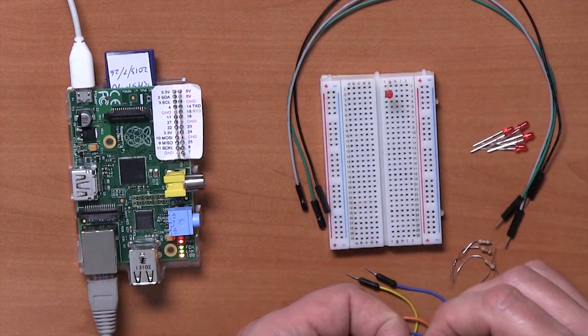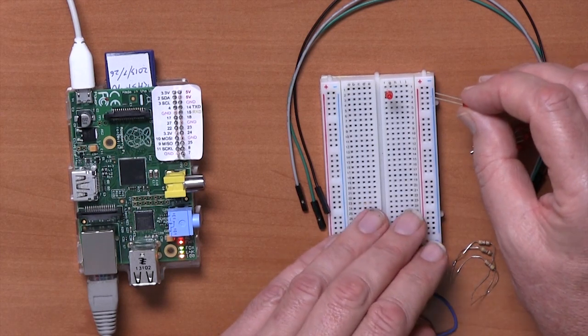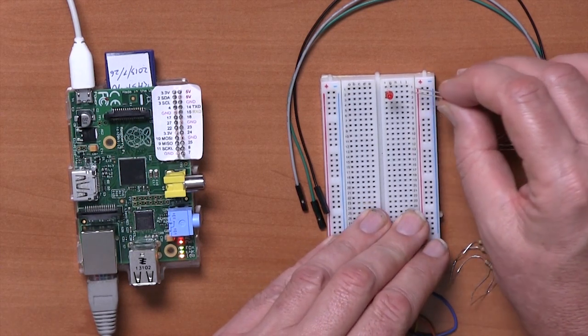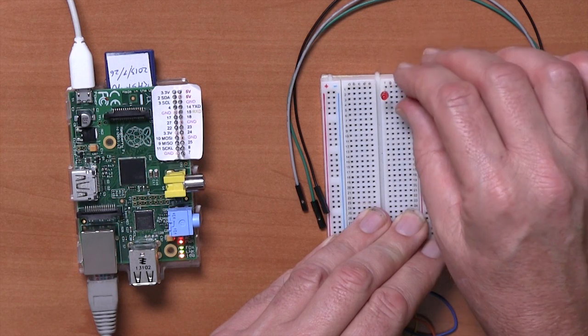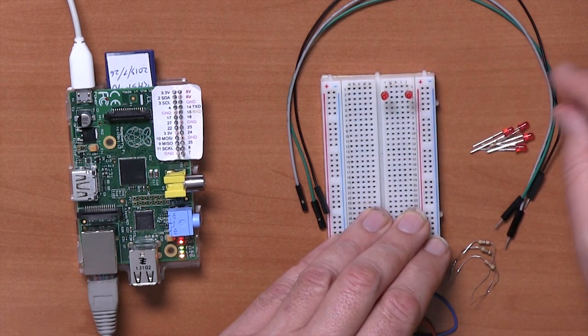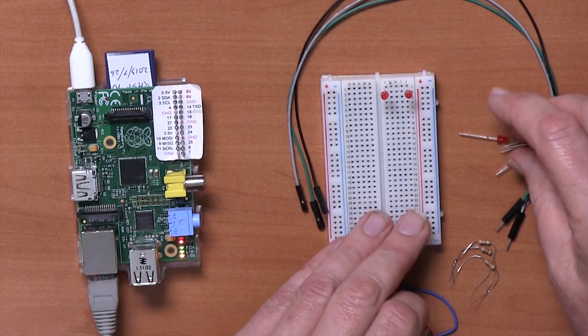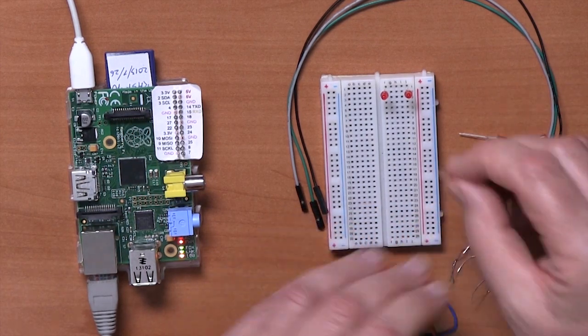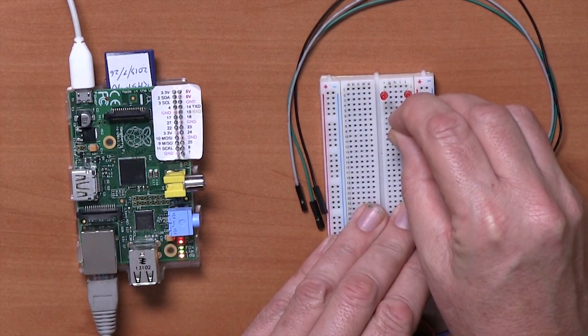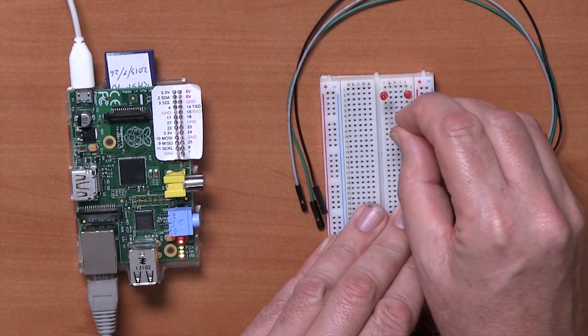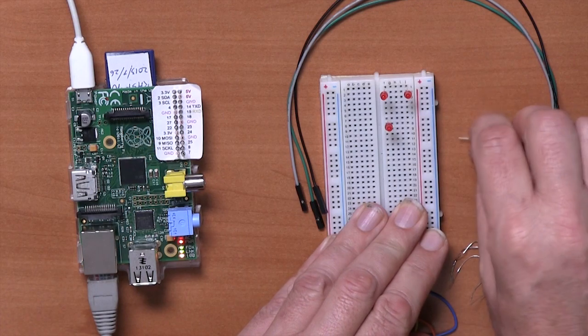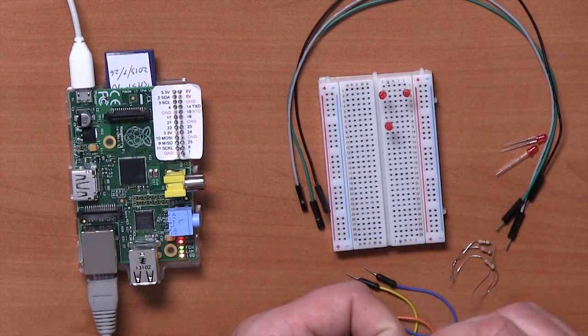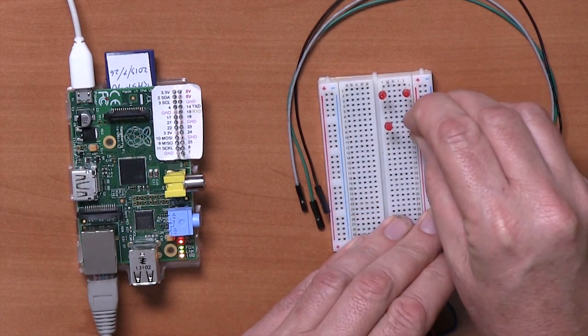We're now going to put a resistor on the same two rows but swapped around so that we've actually got the positive lead at the bottom. If you like, the LEDs you can think of them as being sort of back to back in terms of their connections. Then we're going to do the same with the rest of the LEDs on two rows, on a few rows beneath that. Start off with this row with the positive lead at the top and then it's reversed with the positive lead at the bottom on the same two rows there.